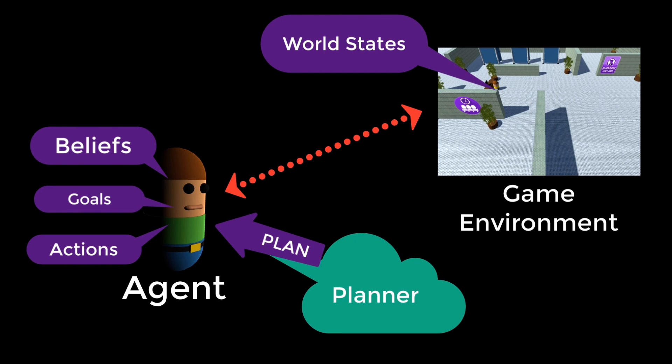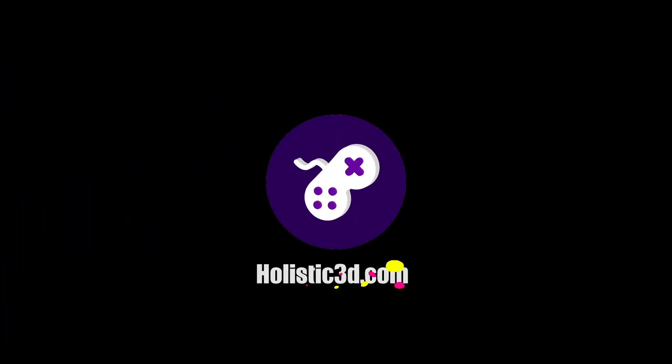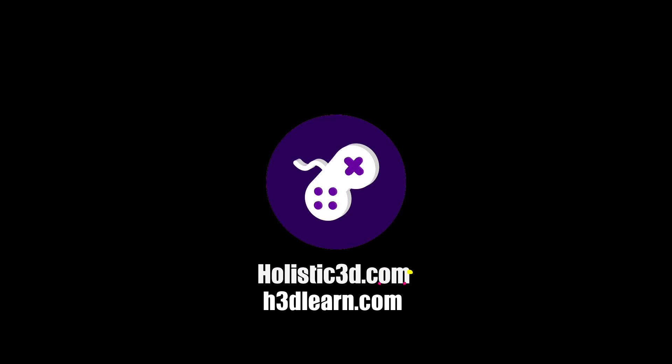So that is the GOAP system that we are about to develop — that's how it's going to conceptually work. Once we get into the code, although it's essentially quite simple, there's still a fair bit of it to write and put together. In the next video, we're going to come back and actually start the coding. If you'd like to support our work, like us on YouTube, visit our website holistic3d.com, or look for our courses on holistic3dlearn.com, or support us on Patreon.